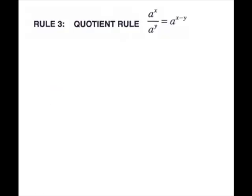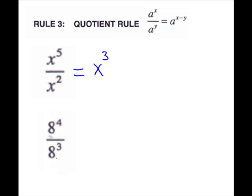Our next rule is called the quotient rule — we have like bases divided. You will keep the base and subtract the exponents. For the first example, it is like bases divided: keep the base, one copy of x, and subtract the exponents. For the next problem, it is also like bases divided — keep the base and subtract, which gives us 8 to the 1st, which simplifies to just 8. Note: I didn't do any math on the bases, I kept the base. You could also work this with order of operations, working out 8 to the 4th and 8 to the 3rd and dividing, but the exponent rule is faster. The bases have to be the same to use it.